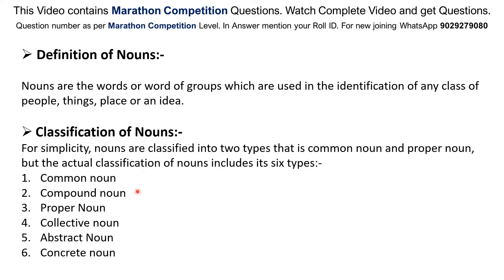Classification of nouns. For simplicity, nouns are classified into two types, that is Common Noun and Proper Noun. But the actual classification of nouns includes six types: Common Noun, Compound Noun, Proper Noun, Collective Noun, Abstract Noun and Concrete Noun.